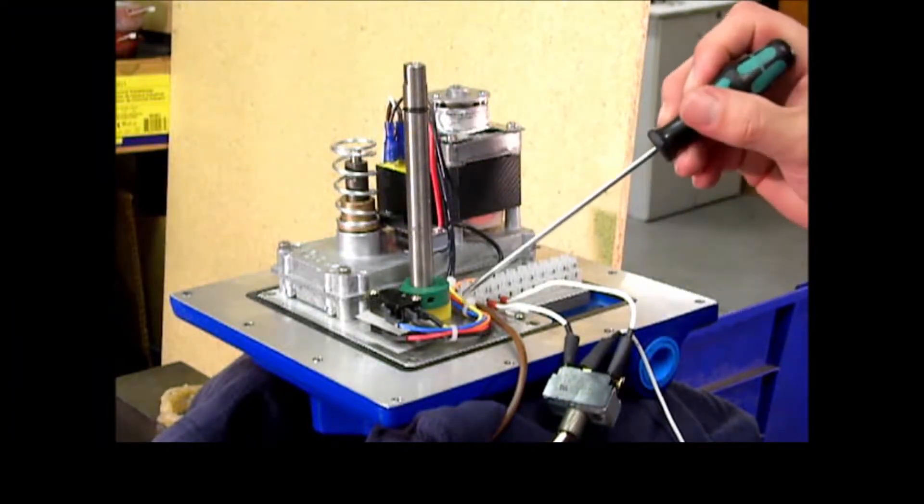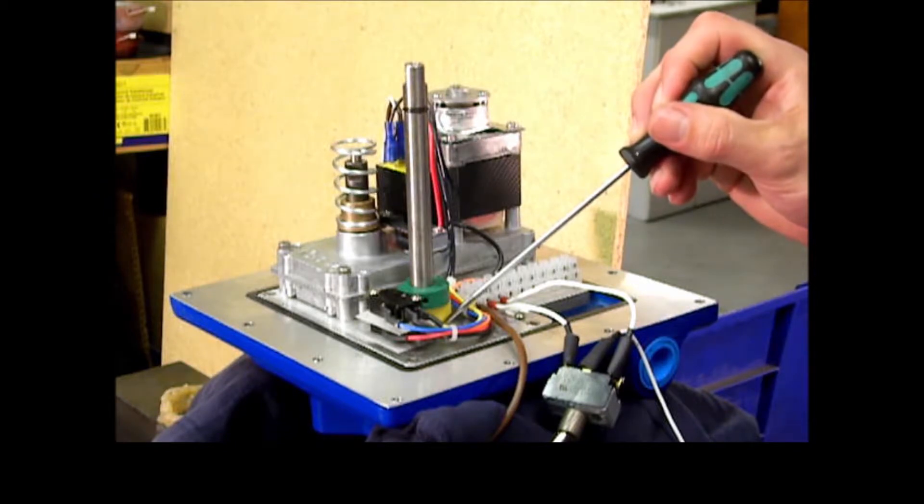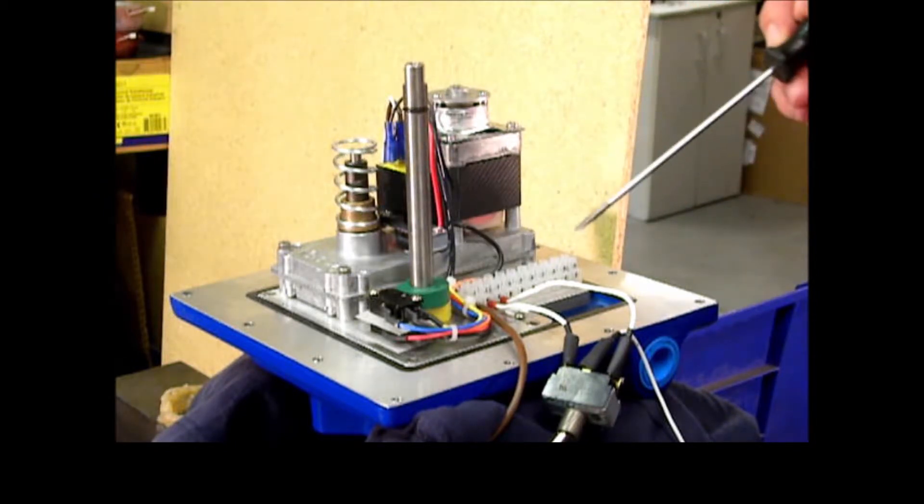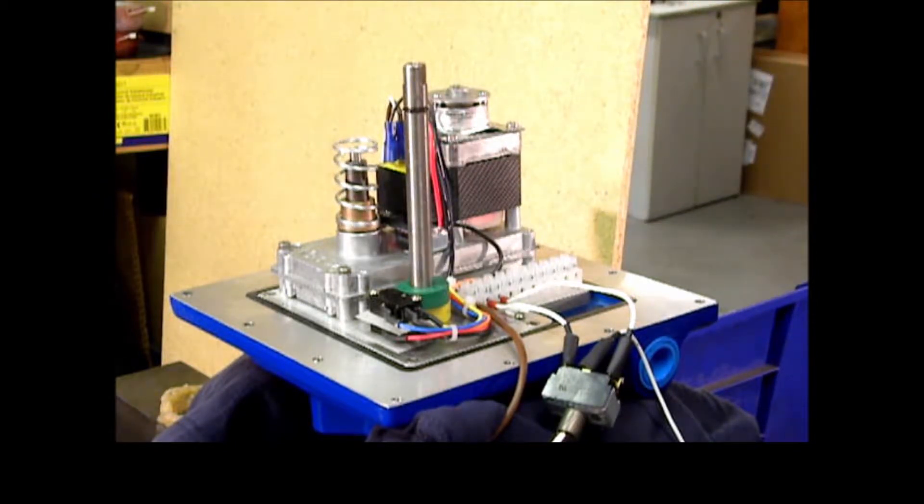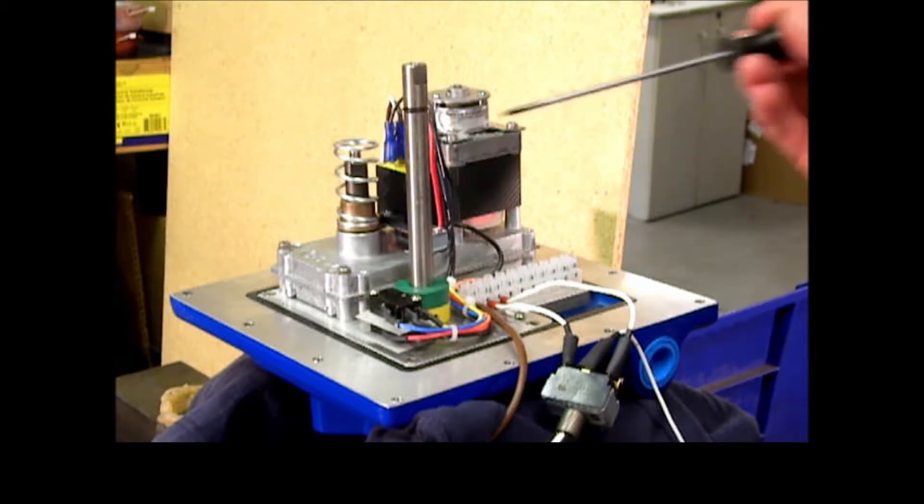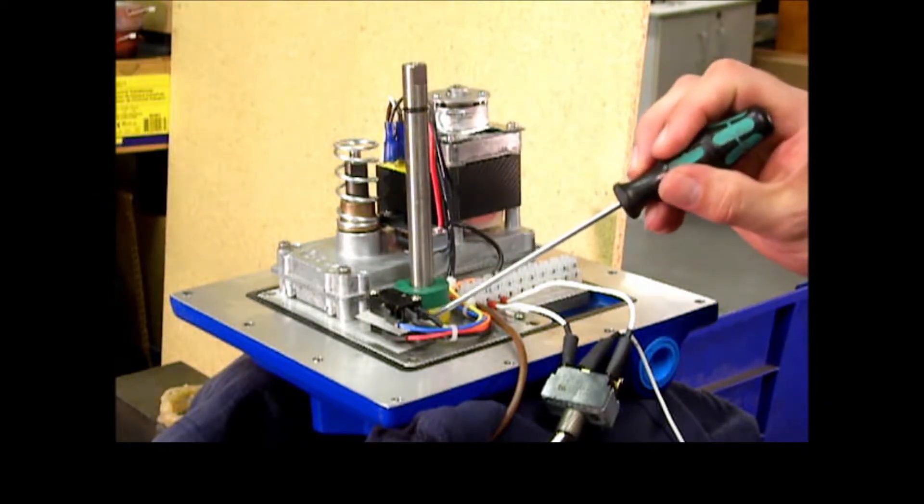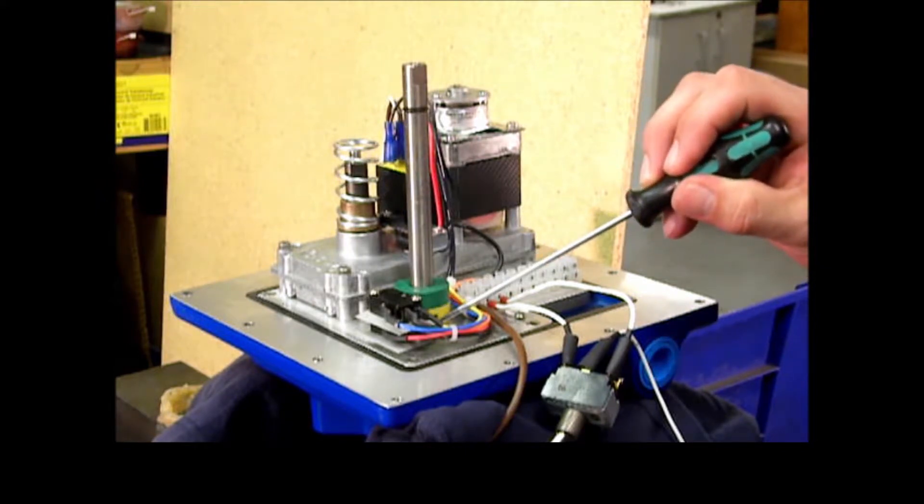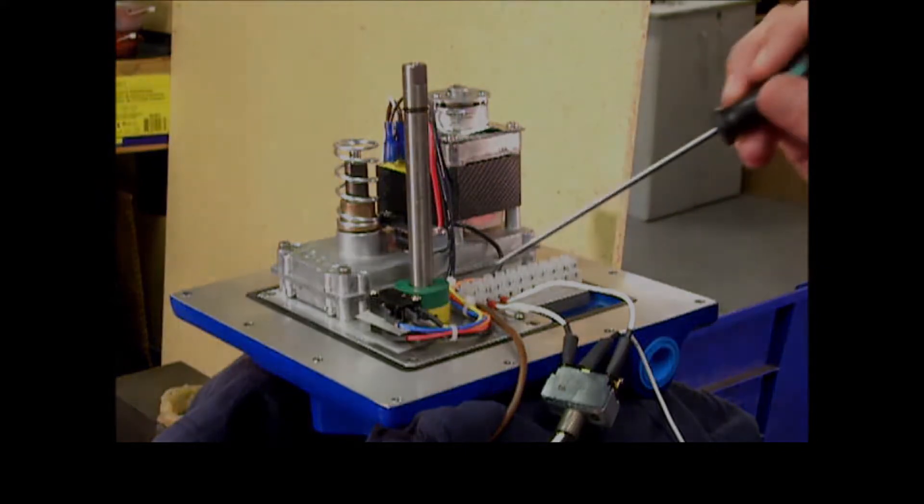This will rotate until the bottom cam rotates to open the switch. The actuator is now in the closed position. The bottom switch has been opened which cuts the power to the motor.